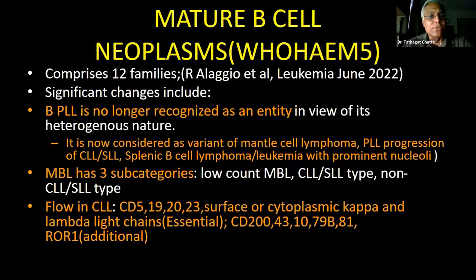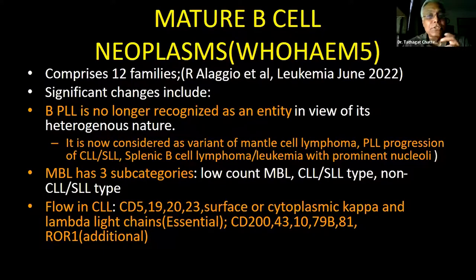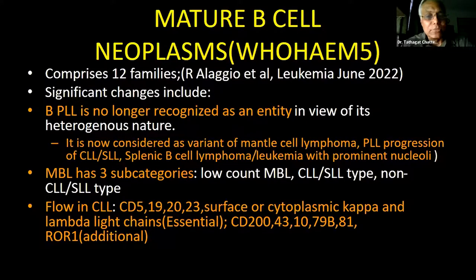In the additional markers — where it is imperative to differentiate CLL from other CLPDs — CD200, CD43, CD10, CD79B, CD81 and more recently ROR1, additionally a transcription factor, have been added. Going on to further additions in the CLPD section of WHO Heme 5: the splenic B-cell lymphoma/leukemia with prominent nucleoli has now replaced hairy cell leukemia variant and all CD5-negative B-cell lymphomas in that category.